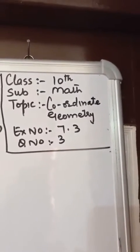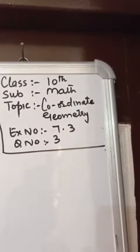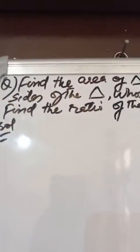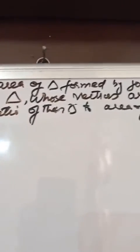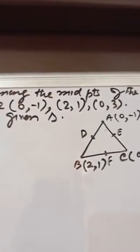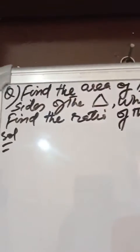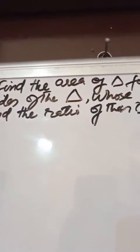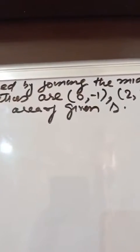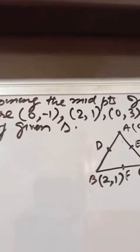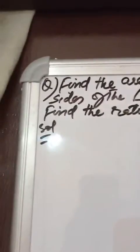Class 10, subject topic: coordinate geometry. Exercise 1.3, question number 3. Find the area of a triangle formed by joining the midpoints of the sides of the given triangle whose vertices are (0, -1), (2, 1), (0, 3).